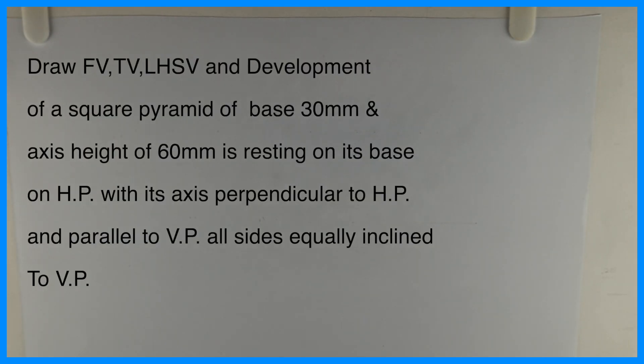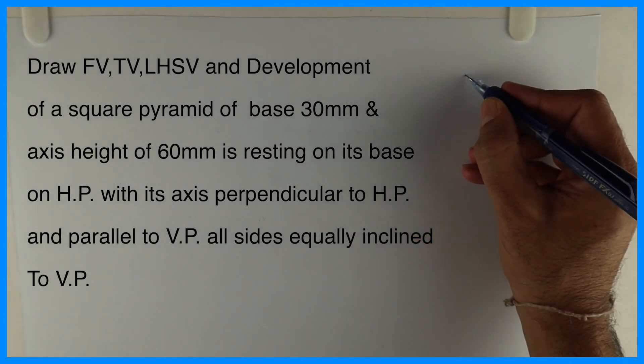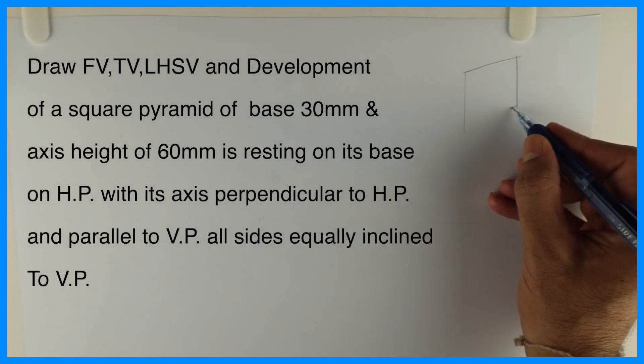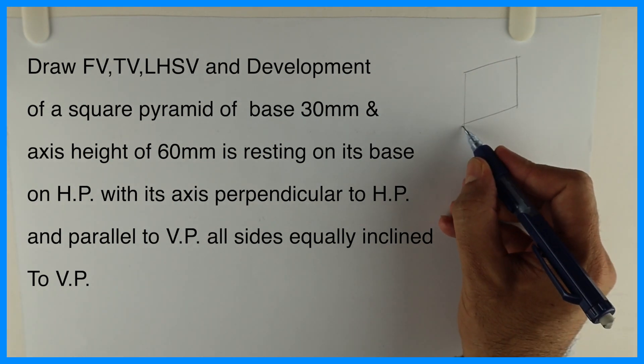Welcome to technical drawing. Today we are going to draw front view, top view, left and side view and development of a square pyramid of base 30 mm and axis height 60 mm which is resting on its base on HP with axis perpendicular to HP and parallel to VP and all sides are equally inclined to VP. When they say all sides are equally inclined to VP, that means all sides are inclined at 45 degrees, but this will be only in case of a square pyramid or square object.